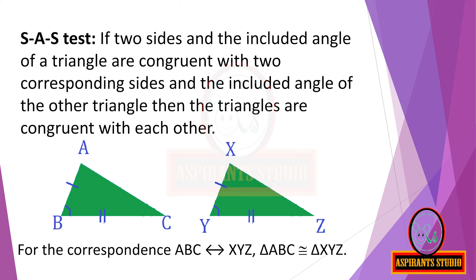For the other triangle, corresponding sides and the included angle have to be taken according to the correspondence of the vertices. Side AB corresponds to side XY, side BC corresponds to side YZ, and angle ABC corresponds to angle XYZ. According to the SAS test, side AB is congruent to side XY, side BC is congruent to side YZ, and angle B is congruent to angle Y, because the two triangles are congruent.